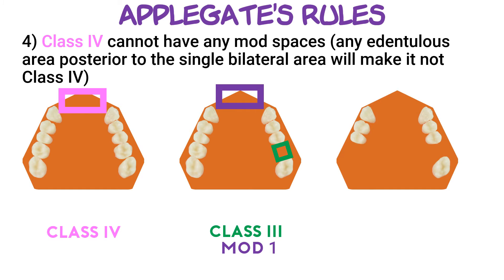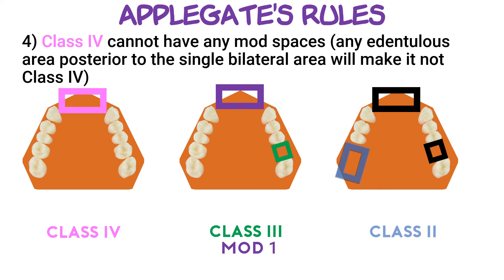Same situation here — we have two edentulous spaces at the back, so there's no way this can be a Class 4 classification. Since the posterior space in quadrant 1 is the most posterior, this arch should be classified as Class 2 Mod 2.